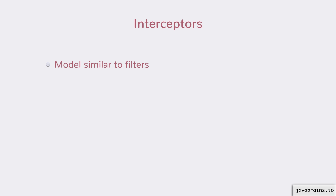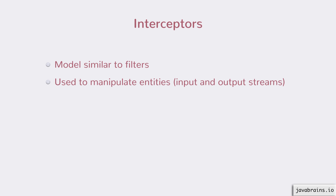Interceptors have been designed to manipulate the entities — to manipulate the input and output streams. This makes them different from filters, in the sense that filters actually manipulate the header information or metadata, while interceptors manipulate the actual body of the request and the response.